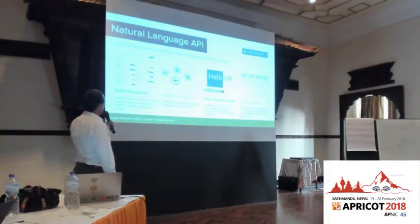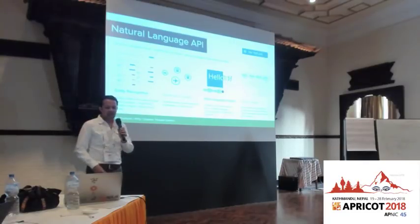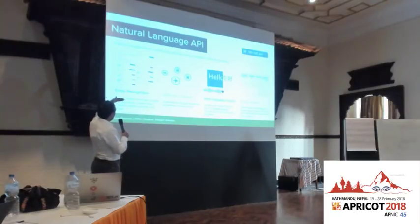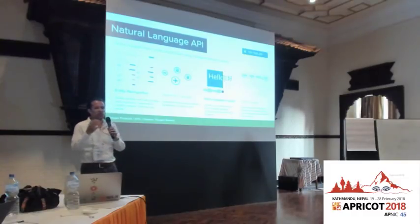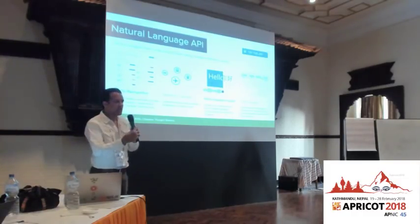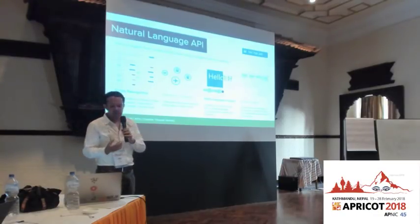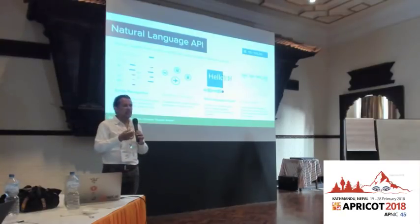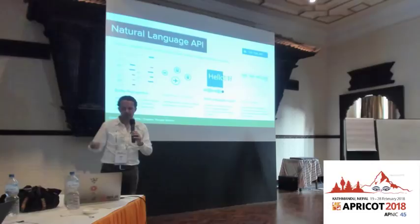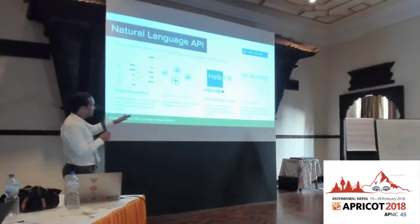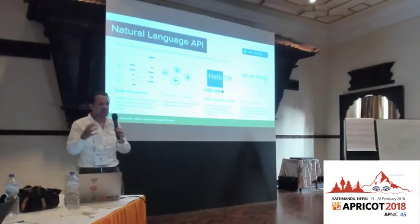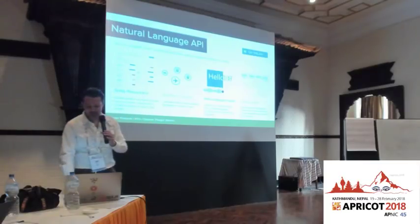The Natural Language API — here you send us plain text, and we use entity recognition to tell you what's important in that text: people, organizations, locations, events — all the things in the Google Knowledge Graph that we know about. We also have sentiment analysis: is the sentence positive or negative towards what it's talking about? All of this is supported in multiple languages. We also support syntax analysis — what are the nouns, pronouns, verbs that make up the sentence — and you can use that to do something interesting.